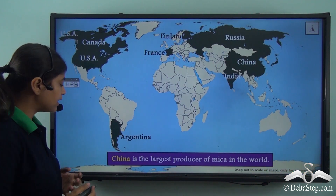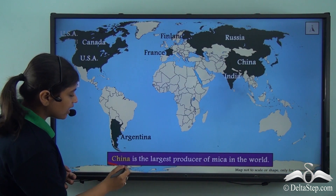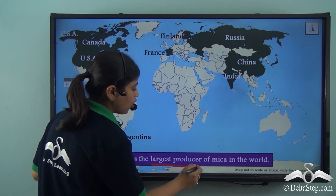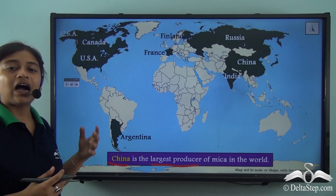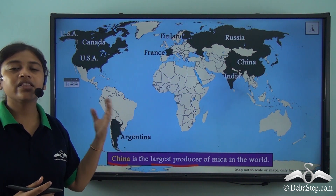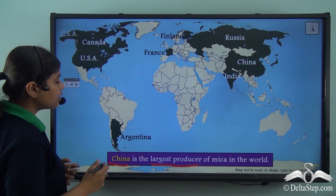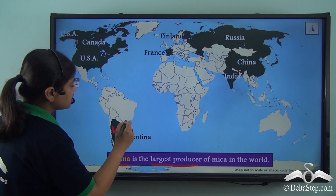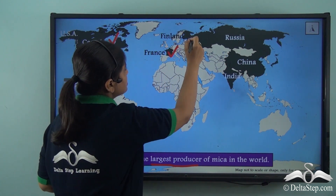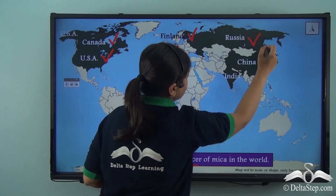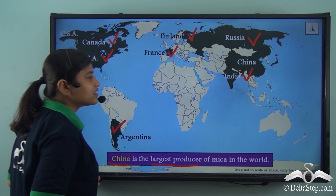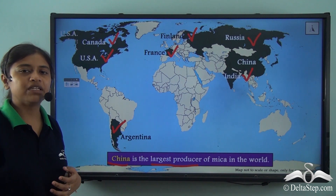Globally, China is topping the list and is the largest producer of mica. Other countries doing well in the production of mica are Argentina, USA, Canada, France, Finland, Russia and India, while China remains the largest producer of this mineral.